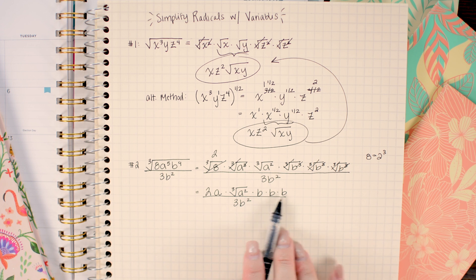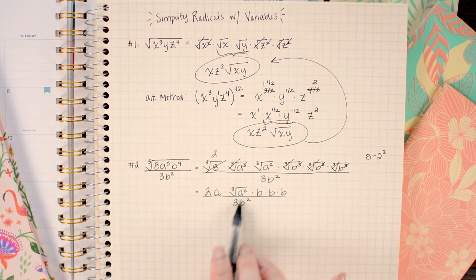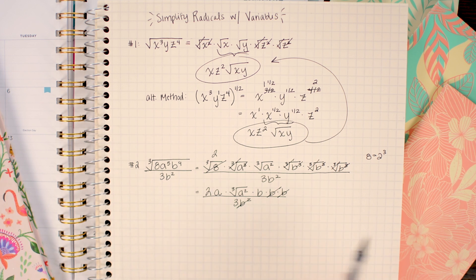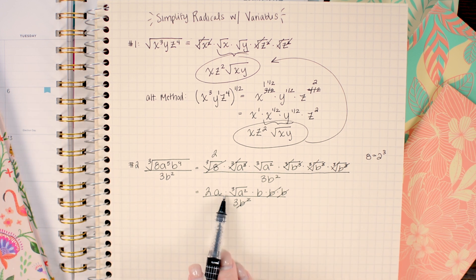Now I'm free to do some cross canceling. I see that I have two b's in the numerator being multiplied together and two b's in the denominator being multiplied together. So those are going to divide to one so I can go ahead and cross cancel out those and check for anything else that can be reduced. I don't see anything else. So now I'm just going to rewrite this in a nice form. I'm going to move this b out in front of the radical and clean this up a little bit.